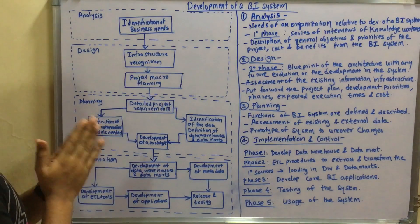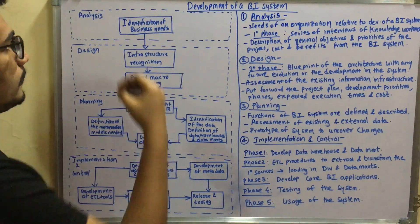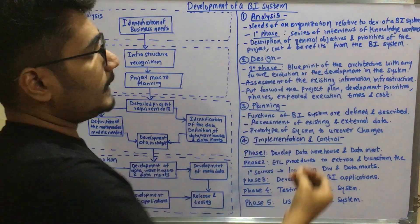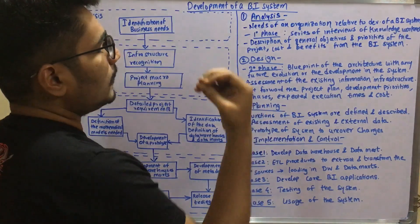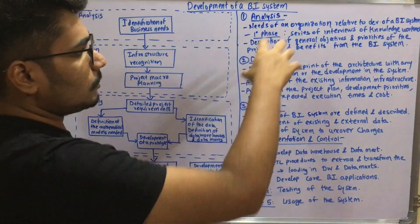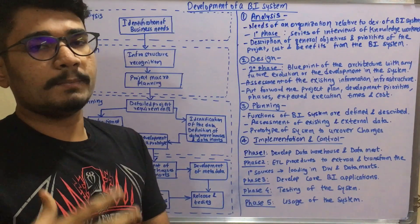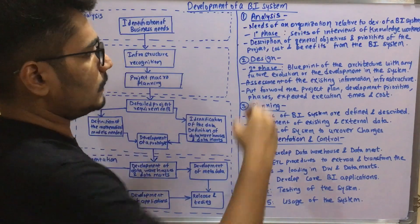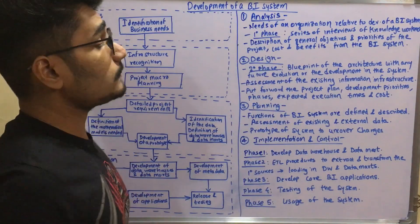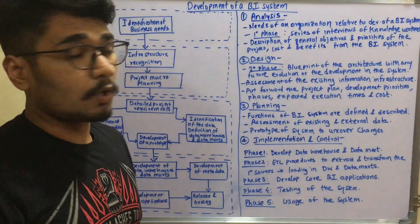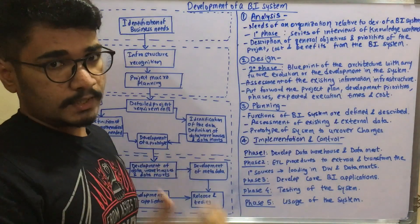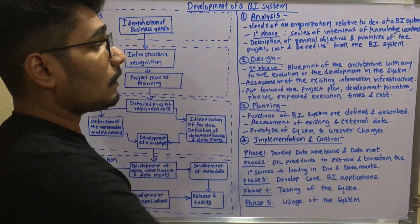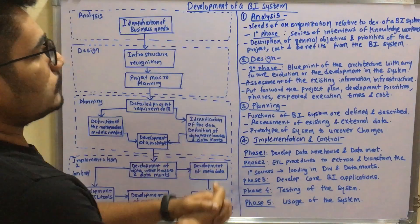The very first step in BI system development is the analysis phase. Here you identify various business needs — the needs of an organization relevant to a business intelligence system. Since this is the primary phase, a series of interviews are conducted with knowledge workers, who are people working in the organization. The outcome is a description of general objectives, priorities of the project, and the perceived cost and benefits from the BI system.